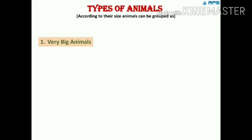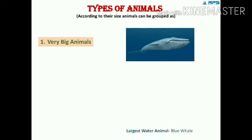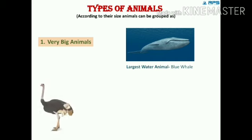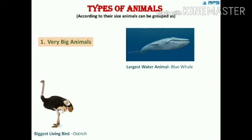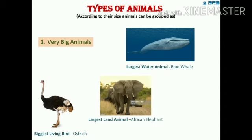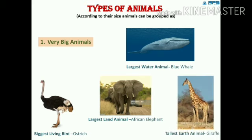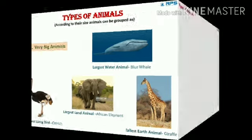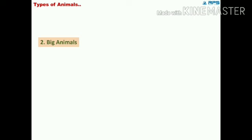The first category is very big animals. The blue whale is the largest animal in water. The biggest living bird on earth is the ostrich, weighing about 150 kilograms. The largest land animal is the African elephant, which weighs about 6000 kilograms. The giraffe is the tallest animal on earth.